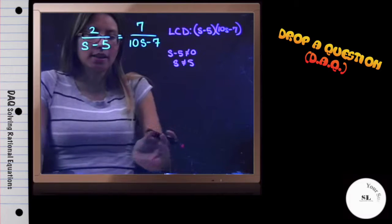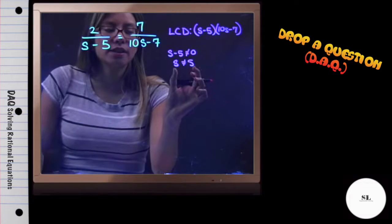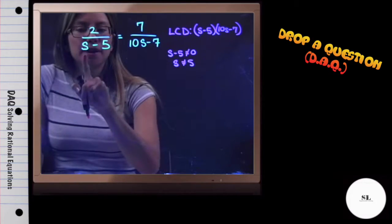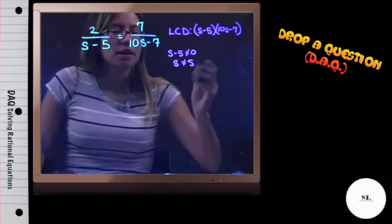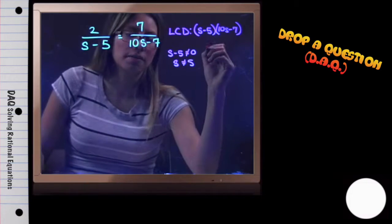When I am finished solving for this, I need to double check my answer and make sure it is not equal to 5, because when I plug in 5 here, 5 minus 5 will be 0, and I cannot divide by 0. We need to make sure that our answer is not 5.